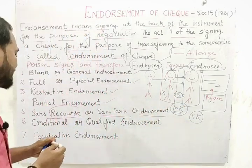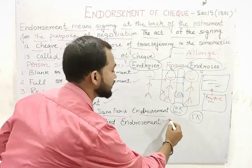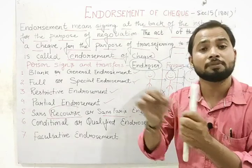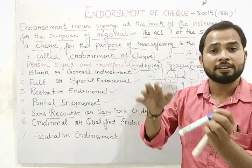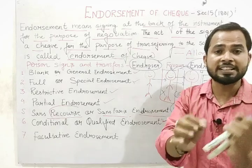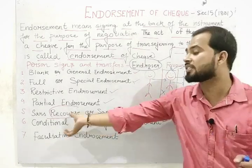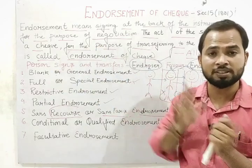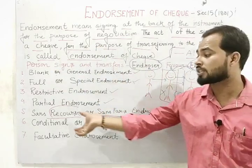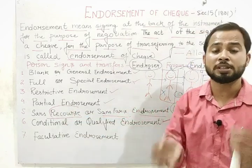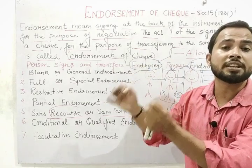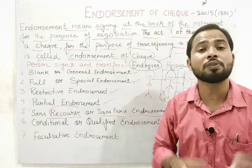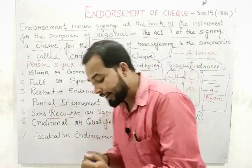The sixth type is conditional or qualified endorsement. When the endorser mentions a condition — for example, this amount will be transferred to Mr. C when a particular condition is fulfilled, such as on a specific date or upon admission — so the transfer of the check happens only when that condition is met. Such type of endorsement is known as conditional or qualified endorsement.